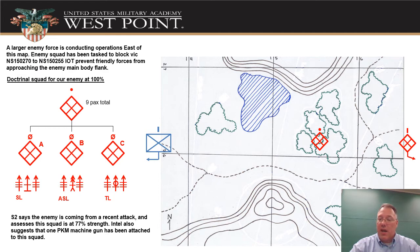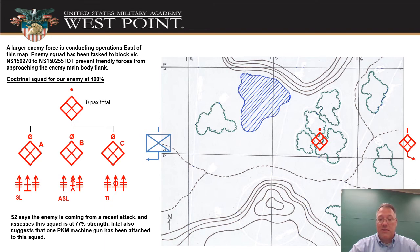Doctrinally, the task org for that enemy squad is nine personnel total, three fire teams. There's a squad leader leading Team A, an assistant squad leader leading Team B, and a designated team leader for Team C. The weapons breakdown: Team A has a machine gun, Team B has an anti-tank RPG launcher, and Team C has the grenade launcher.